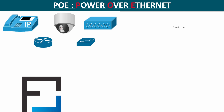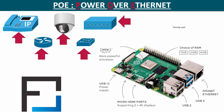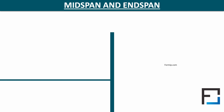Today, PoE is used for many devices — for example, VoIP phones, IP cameras, wireless access points, small routers and switches, and even the Raspberry Pi. All these PoE devices are simply called powered devices, or PD. We will now see how it is possible to power an Ethernet cable. A device that provides power over the cable is called power sourcing equipment, or PSE.